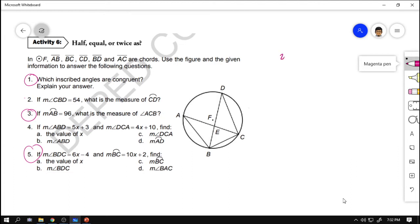So for number 2, given the measurement of angle CBD is equal to 54 degrees, or 54, what is the measure of CD? Based on the figure, eto si angle CBD. So angle CBD. In the given figure, this is angle CBD. Okay?